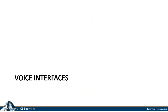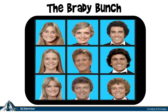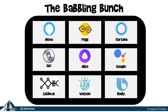One interesting area is voice interfaces — many of you have seen the Brady Bunch-style grid. Looking at the 'Babbling Bunch' — the voice interfaces — there are many of them: Alexa, Peg, Cortana, Siri, Alice, Google Assistant, Lucida AI, Watson, and Bixby. What's important here is understanding how many different voice interface options are out there.